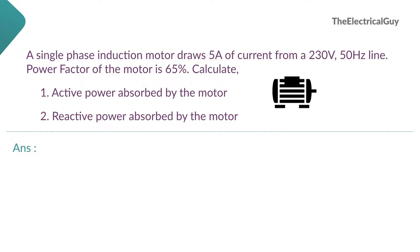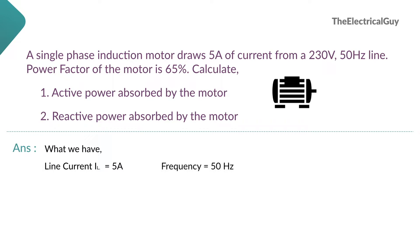First, let's take out the given data. We have line current IL = 5 amperes, frequency = 50 Hz, line voltage VL = 230 volts, and the power factor of the motor = 65%. Taking out the given data first makes it clear what information is available and how to use it to find other results.